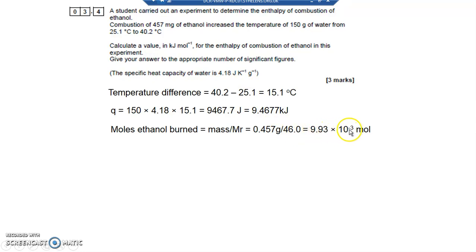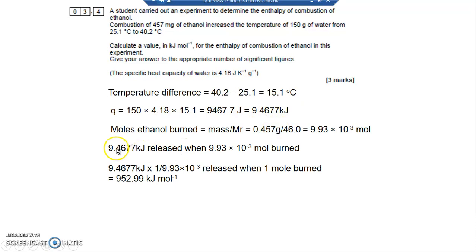I've got a small amount, so I need to scale up to get one mole. I do one divided by that, and multiply that by the value of Q. This amount of energy is released when 9.93 times 10 to the minus 3 moles are burnt. I divide by that value to get a scaling number, then multiply by the kilojoules. That tells me the heat energy released when one mole burned: 952.99 kilojoules per mole.